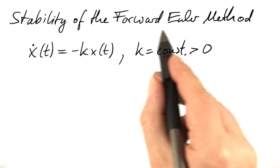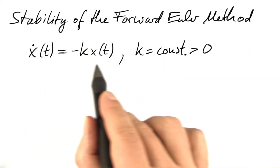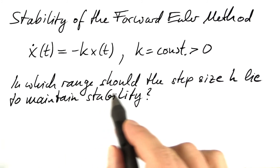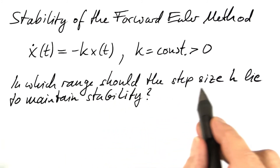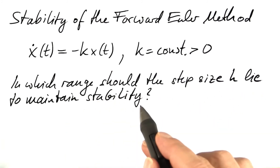We're going to analyze the forward Euler method with the help of Dahlquist's test equation. In which range should the step size h lie to maintain stability?